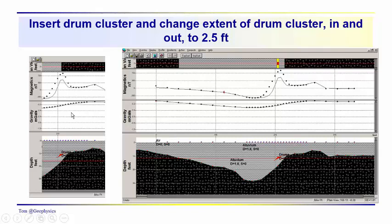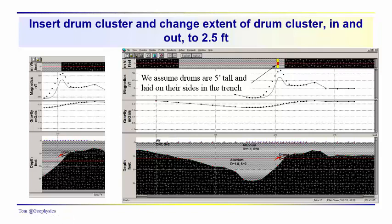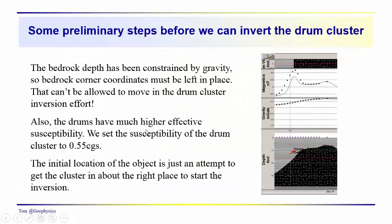Now we've got this anomaly that we're going to measure. We put an object in here. We also realize that we have to control the extent of the drum in and out of the profile line. We assume that our profile line goes directly over the center of the drum. I've just highlighted it here - we're just going 2.5 feet in this direction, 2.5 feet in this direction. Whereas the bedrock is going out to plus and minus infinity. So the bedrock depth has been constrained by the gravity and these corner coordinates have to be left in place.